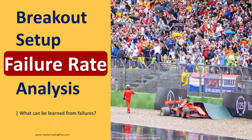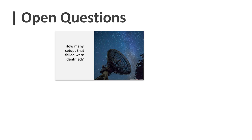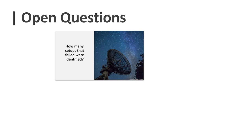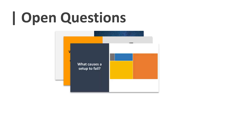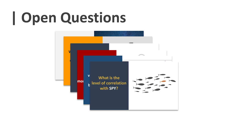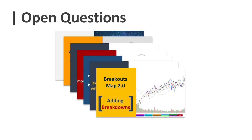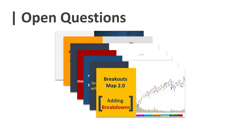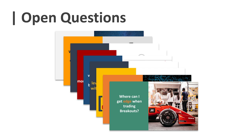There are more than 125 slides ahead. I'll keep a good pace during the presentation, but you can pause and review the slides in more detail whenever needed. Here are the open questions: How many setups that failed were identified? What was one of the main observations of the deep dive? What causes a setup to fail? In which 30-minute timeframes are breakdowns more likely to happen? How much volume is present in the breakdown area? What is the level of correlation with SPY? Breakout Map 2.0 adding breakdowns — a very interesting part I highly advise you not miss. What is the ADR in the breakouts and breakdowns dataset? And where can I get edge when trading breakouts? A lot of topics to cover, so let's go.